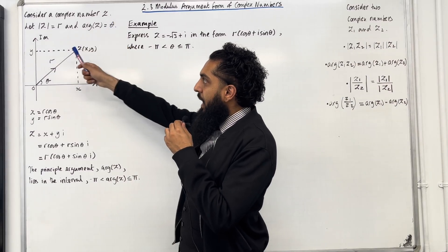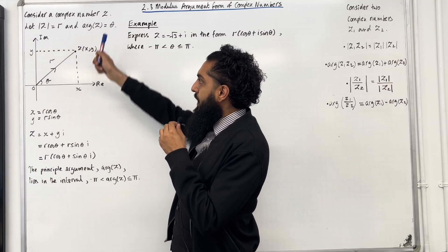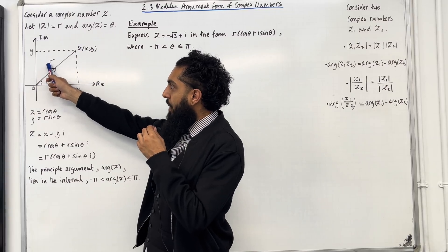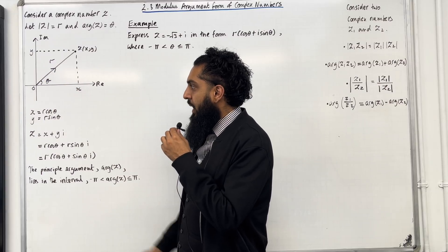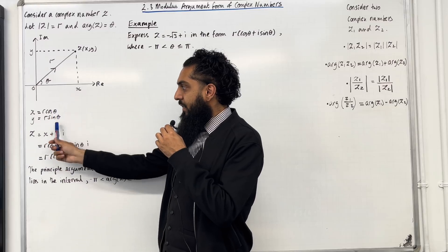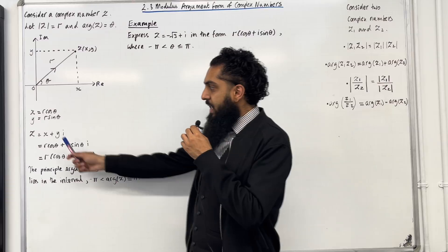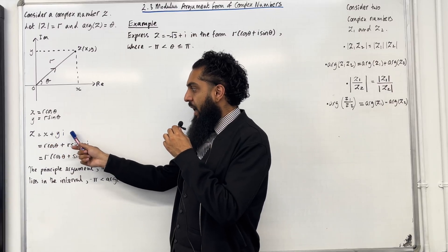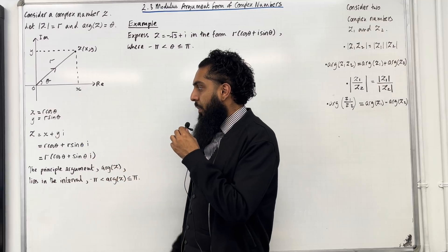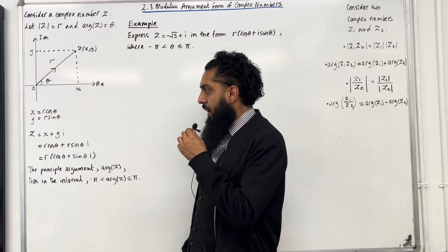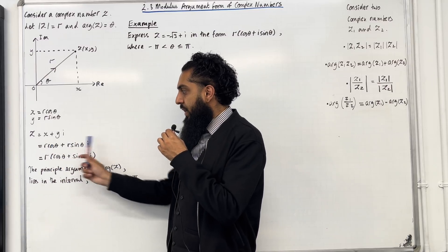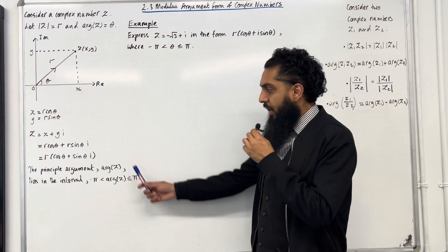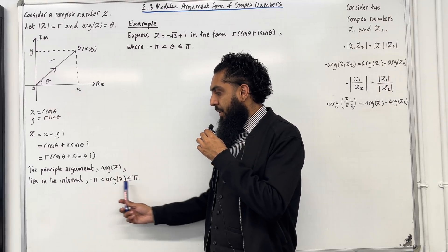Consider a complex number z. Let the modulus of z equal r and let the argument of z equal theta. In the Argand diagram, z is represented by the point (x, y), where x = r cos θ and y = r sin θ using SOHCAHTOA. So z = x + yi = r cos θ + r sin θ · i, which can be written as r(cos θ + i sin θ). The principal argument arg z lies in the interval: −π < arg z ≤ π.